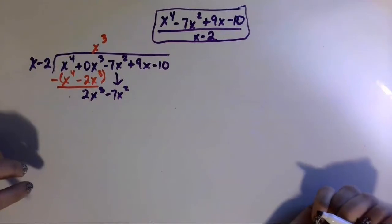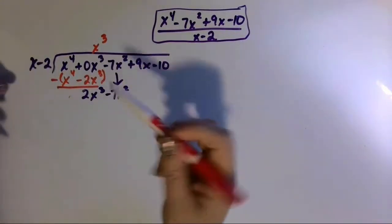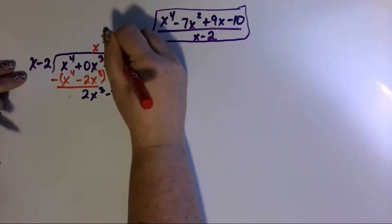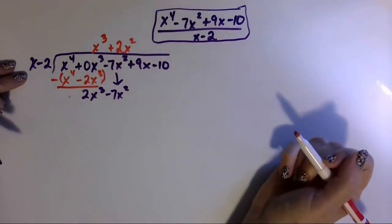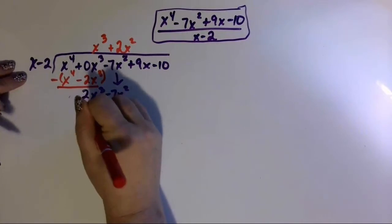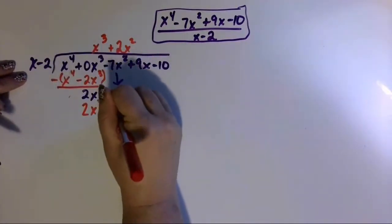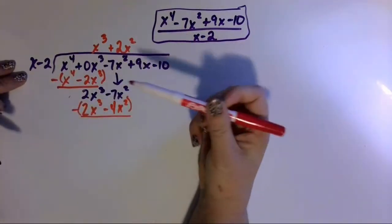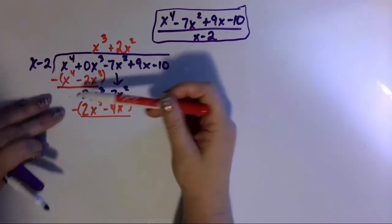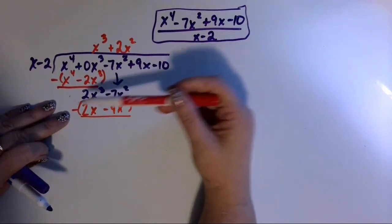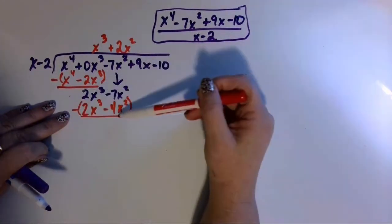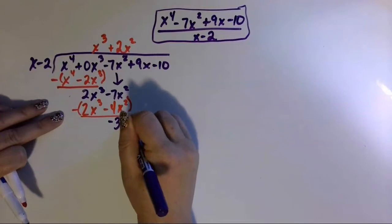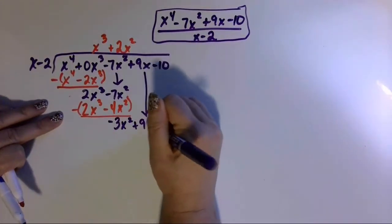That leaves me with positive 2x cubed, and then minus 7x squared when I bring down the next term. Repeating the algorithm: what do I multiply times x to get 2x cubed? That would be 2x squared. Distributing: 2x squared times x is 2x cubed; 2x squared times negative 2 is negative 4x squared. Draw a line, change the sign, and combine like terms. 2x cubed minus 2x cubed cancels; negative 7x squared minus a negative 4x squared gives negative 3x squared.